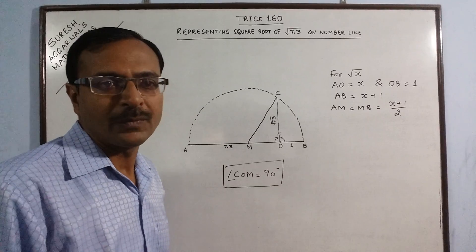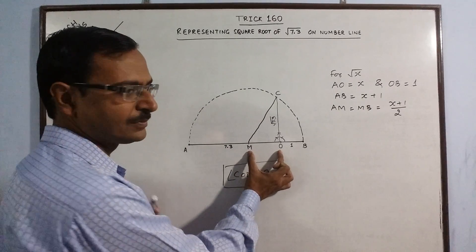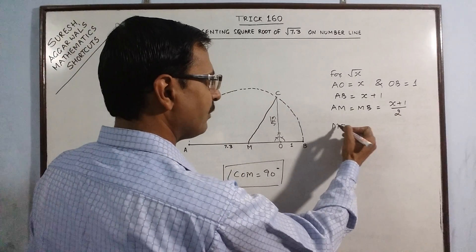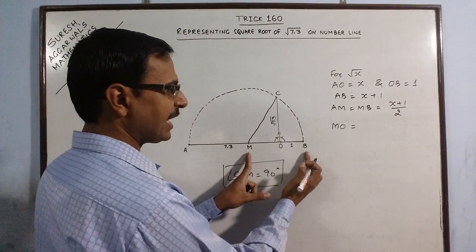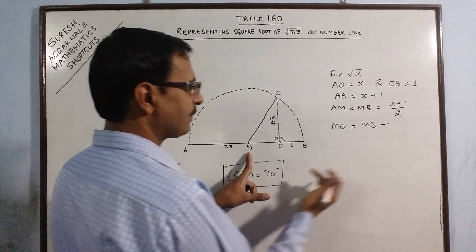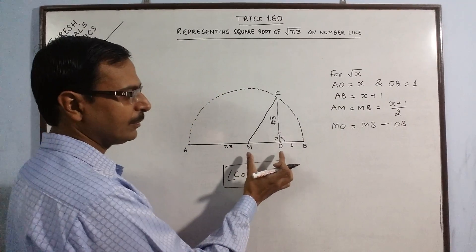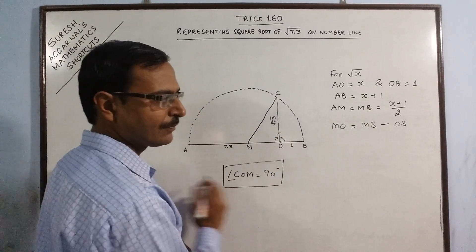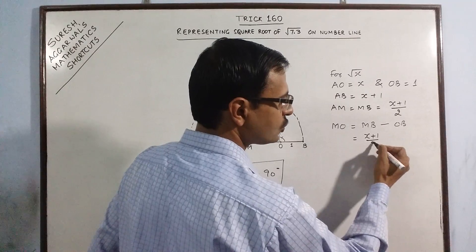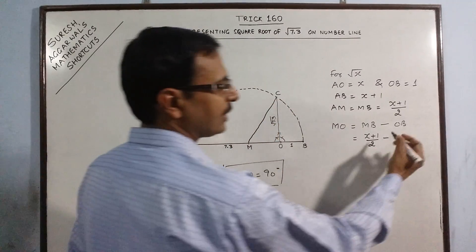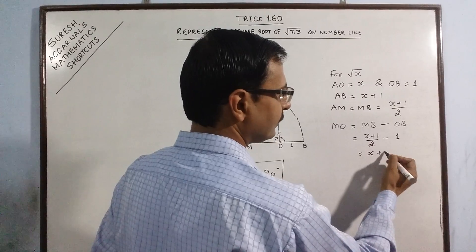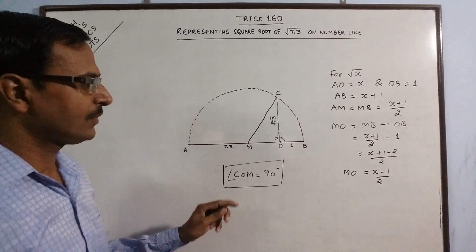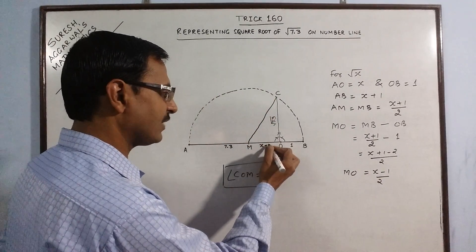For finding MO, I will write MO as: if I take MB and subtract OB from this, I will be left with MO. So MO can be found out by subtracting OB from MB. What is MB? MB is (x+1)/2 minus OB is 1 unit. If you take LCM, this will become (x-1)/2.